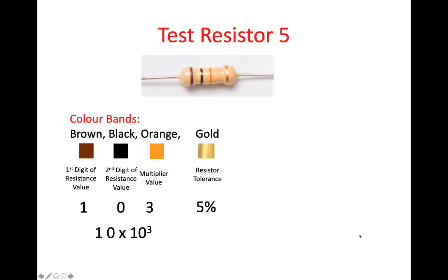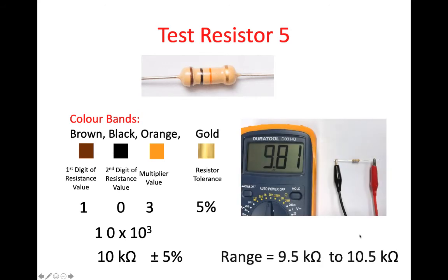So that gives you 10 multiplied by 10 to the power of 3, plus or minus 5%, which is 10K ohms. If you look at that in a range, you'd expect that resistor to have a resistance within 9.5K ohms to 10.5K ohms. And when we measure it, we get 9.8K ohms.